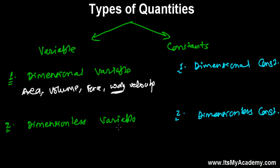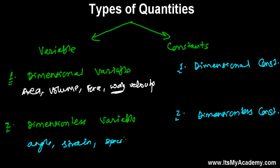Next is dimensionless variables. There are physical quantities whose value changes, but they do not possess any kind of dimension. For example, angle, strain, and specific gravity — these are physical quantities, they are variable as well, but they do not possess any dimension.